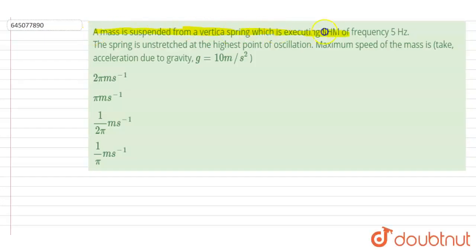from a vertical spring which is executing simple harmonic motion of frequency 5 hertz. The spring is unstressed at the highest point of oscillation. The maximum speed of the mass is... So if you see here, the frequency is given and it is said that it is a vertical spring.